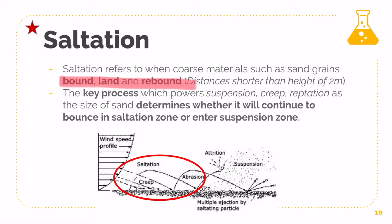As they're thrown back down, that is when a particle hits another particle, and if you recall, that is actually an erosion process called abrasion. So saltation and abrasion usually work hand in hand, whereby your particles are picked up from the ground and then thrown back onto the ground, hitting into another particle which erodes it. Both particles erode — that is abrasion. Saltation is essentially the key process which powers your suspension, creep, and raptation.